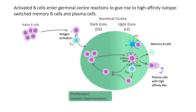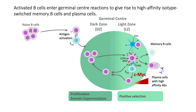For terminal differentiation, B cells undergo the germinal center reaction. Germinal centers are found in secondary lymphoid tissues such as lymph nodes and spleen. They are composed of two compartments: dark zone and light zone. Upon antigen activation, naive B cells enter the dark zone for proliferation and somatic hypermutation to increase antibody diversity, then migrate into the light zone for affinity maturation with the help of follicular helper T cells. During this process, they increase MYC expression, which is an important driver for positive selection, and ultimately terminally differentiate into memory B cells or plasma cells with high-affinity antibodies.